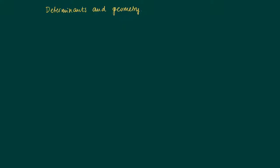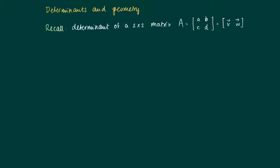In this clip I will interpret the determinant as an expansion factor of a linear transformation T. Recall that the determinant of a 2x2 matrix A is A, B, C, D, where I have two columns V and W.